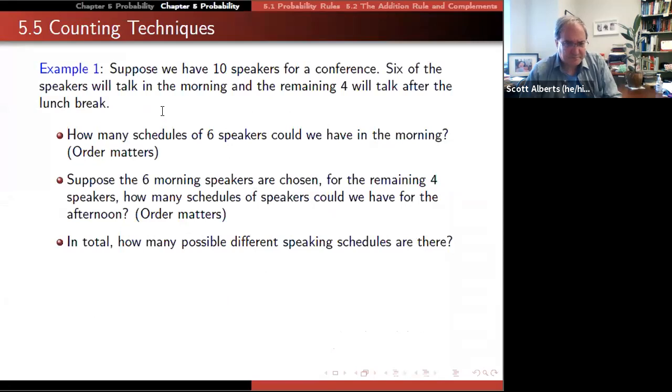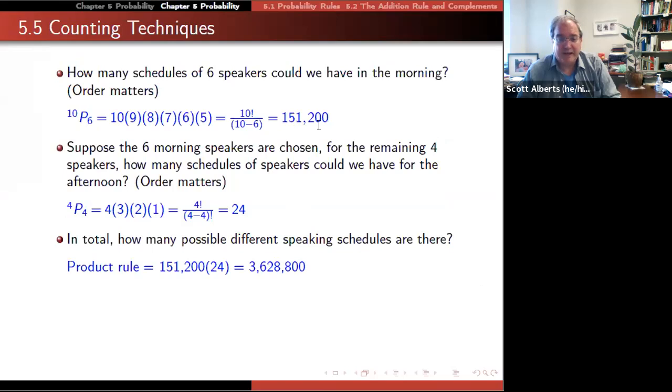All right. So again, we have 10 speakers for a conference. Six of the speakers will talk in the morning and four of them will talk after the lunch break. So how many schedules of six speakers could we have in the morning? Again, that's going to be 10, 9, 8, 7, 6. But notationally, we're going to think of that as 10 factorial over 4 factorial with the canceling out of that. And then of the remaining four, there's just going to be 4 factorial of those. And again, we can work that out. And then if we say how many possible ways are there for those together, we just take the top morning numbers times the afternoon numbers and multiply them together, because that's the simple product rule, just like the pants for the Oregon football team.